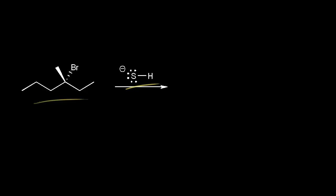We know that the first step of our SN1 mechanism should be loss of a leaving group. So if these electrons come off onto the bromine, we would form the bromide anion. And we're taking a bond away from the carbon in red, so the carbon in red should get a plus one formal charge. So let's draw the resulting carbocation here. That carbon should have a plus one formal charge.